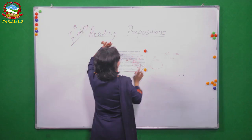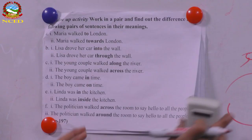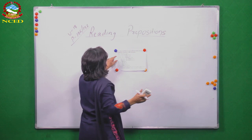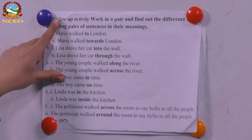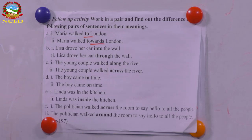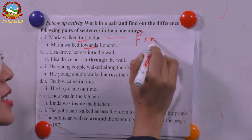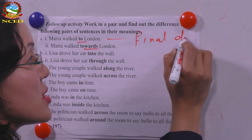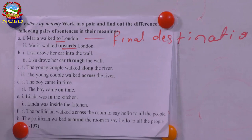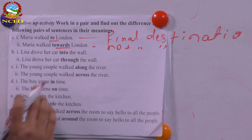Now the last exercise: work in pairs and find out the differences in the following pairs of sentences. 'Maria went to London' versus 'Maria went towards London.' 'To London' means London is her final destination — she wanted to reach London exactly. 'Towards London' means maybe she wanted to go somewhere in that direction, but London is not necessarily her final destination — she may have gone somewhere from there.